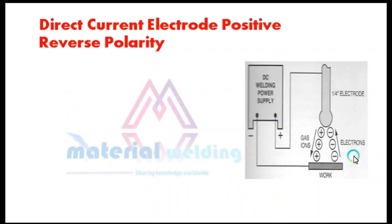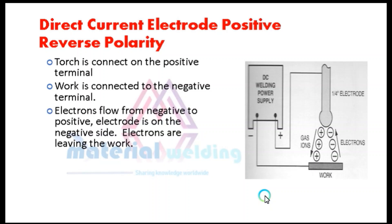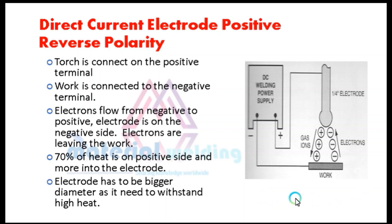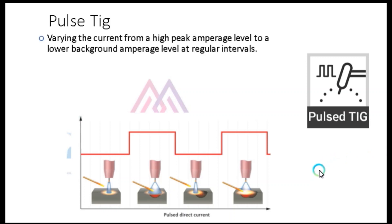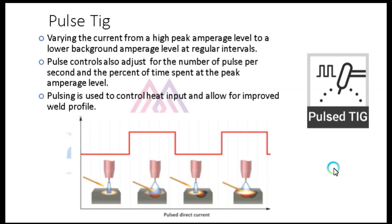Direct current electrode positive, or reverse polarity: here the torch is connected to the positive terminal and work is connected to the negative terminal. Electrons flow from negative to positive, so the electrode is on the positive side. Electrons are leaving the work, meaning 70% of heat is on the electrode side. The electrode must be a bigger diameter as it needs to withstand high heat. Pulsed TIG works by varying the current from a high peak amperage level to a lower background amperage level at regular intervals. Pulse controls also adjust for the number of pulses per second and the percent of time spent at the peak amperage level. Pulsing is used to control heat input and allow for improved weld profile.